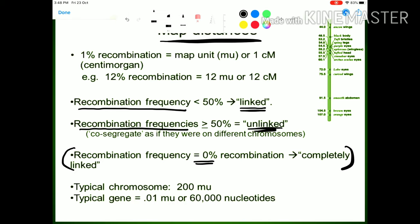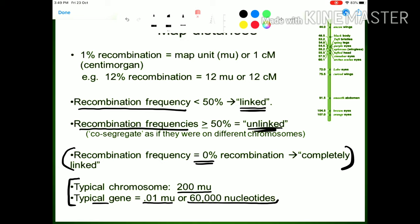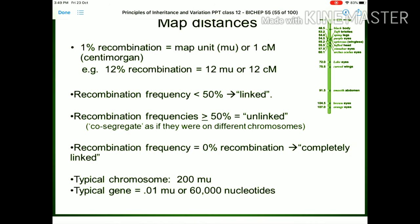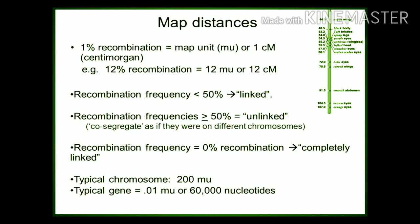An average human chromosome is 200 map units. A typical gene distance is 0.01 map units, and one average gene consists of 60,000 nucleotides. These are average values calculated by scientists and are important terms to remember for competitive exams.